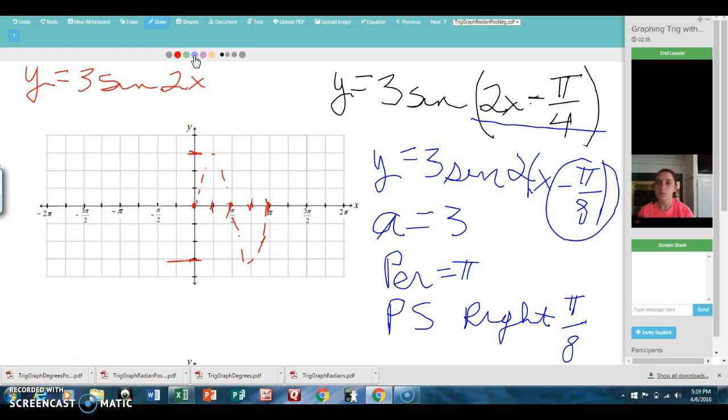Now I'm going to take all of my points and move them pi over 8 to the right. On my graph paper, one space is pi over 4, so I'm going to be moving these all half of a space. Let's see here... here, and here.